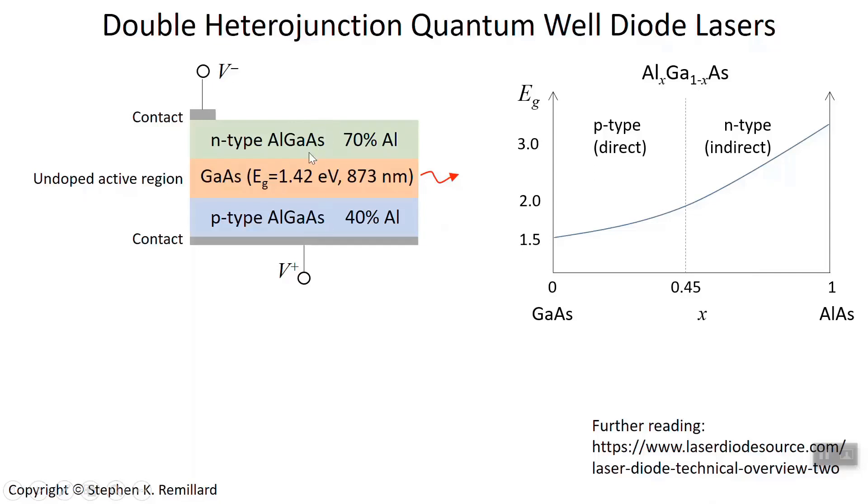as well as the bandgap. And the p-type is a direct bandgap semiconductor, and the n-type is an indirect bandgap. And that actually can be taken advantage of.